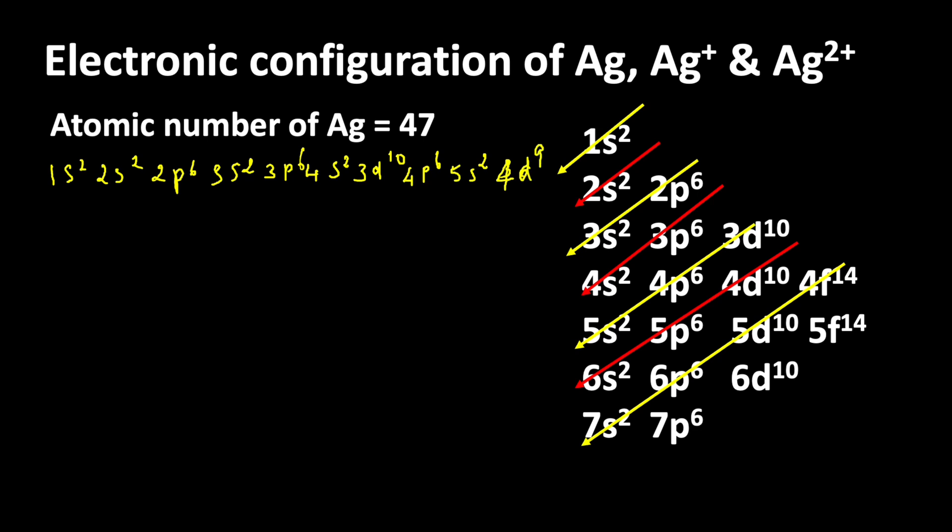If we count all these electrons we will get the maximum number of electrons available in silver, that is 47. But this is not the correct electronic configuration of silver. When we think about electronic configuration, we also think about the stability of an atom. Half filled and completely filled orbitals are stable.